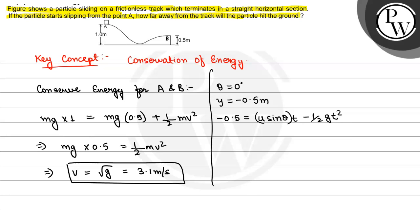This will be equal to 0.5 equals 4.9 T squared, or T will be equal to 0.31 seconds. This will be the time of flight.